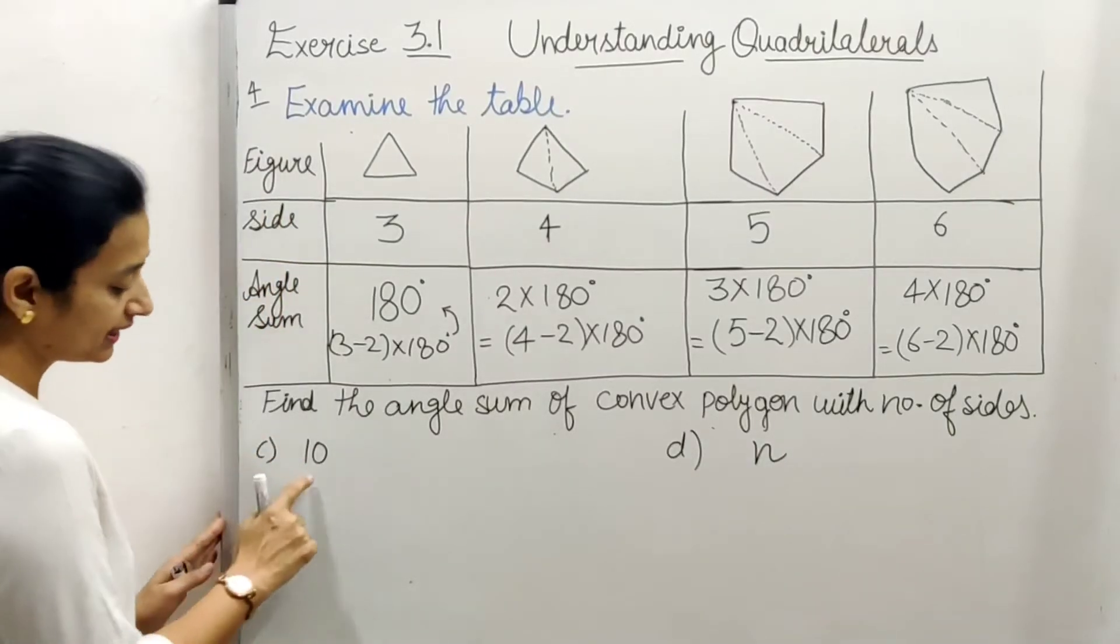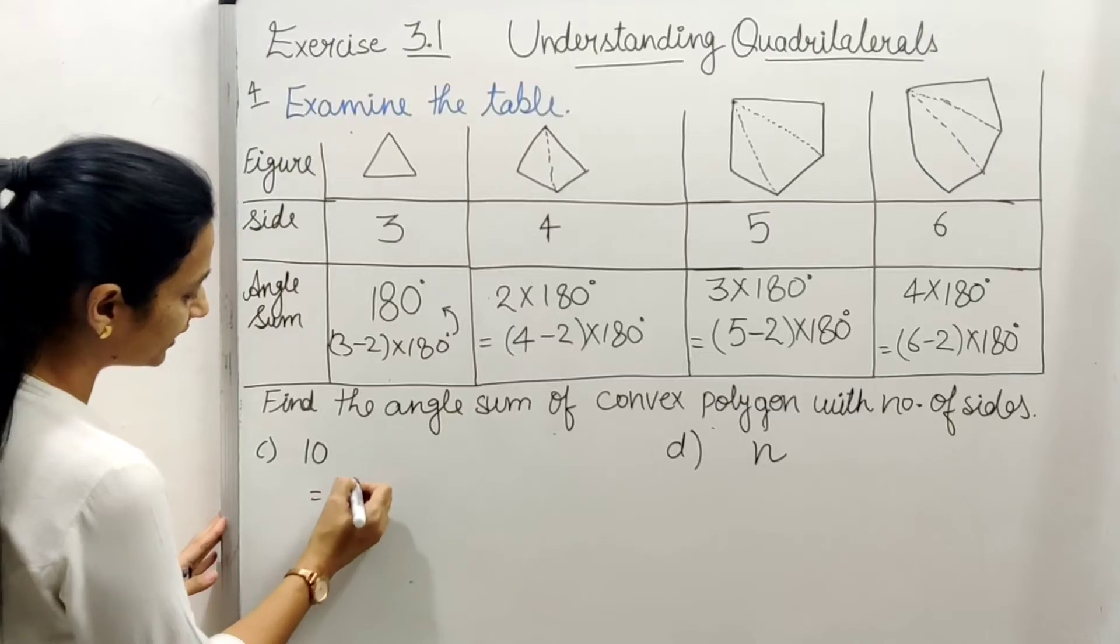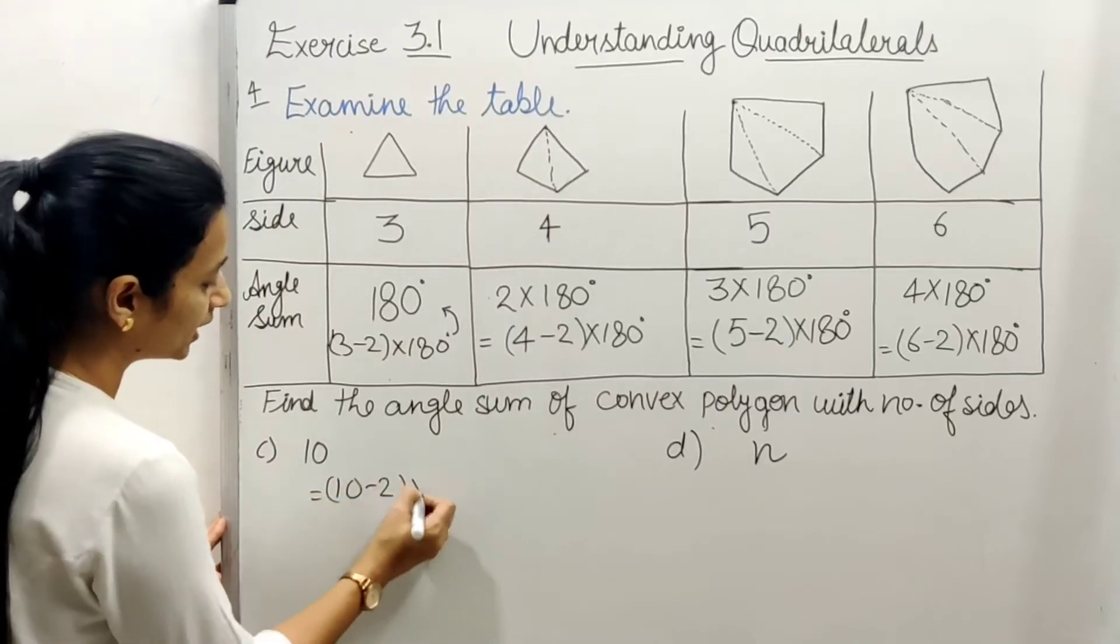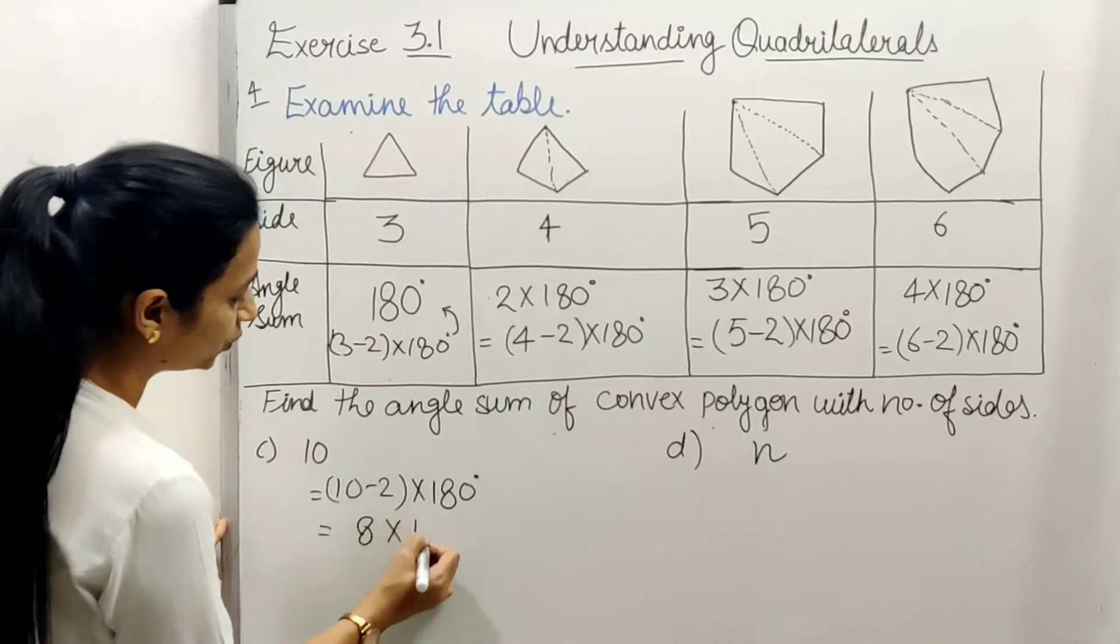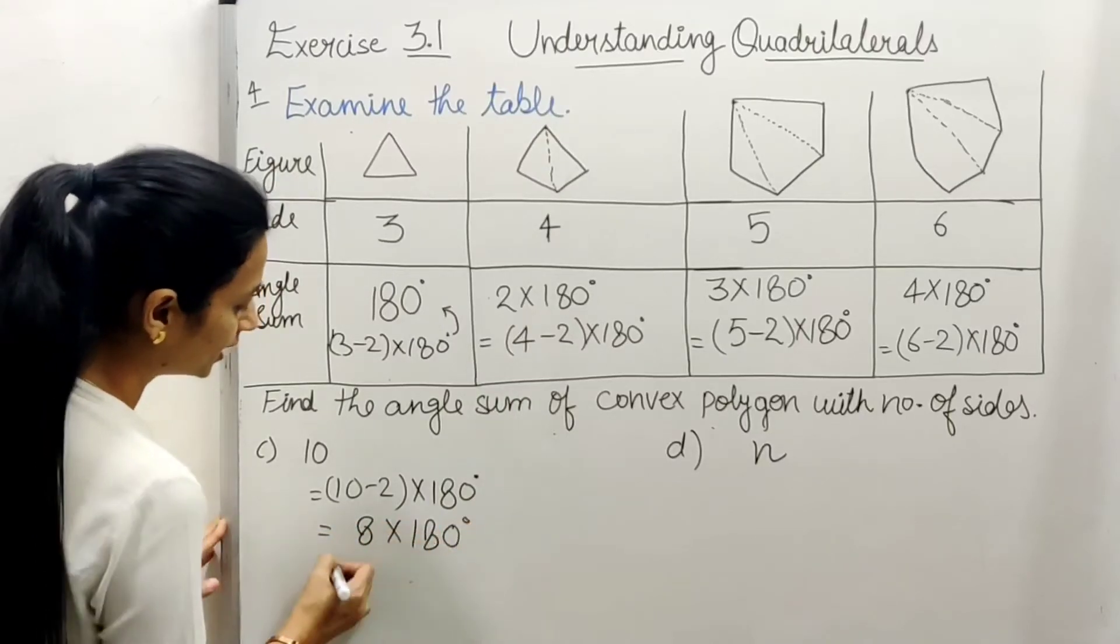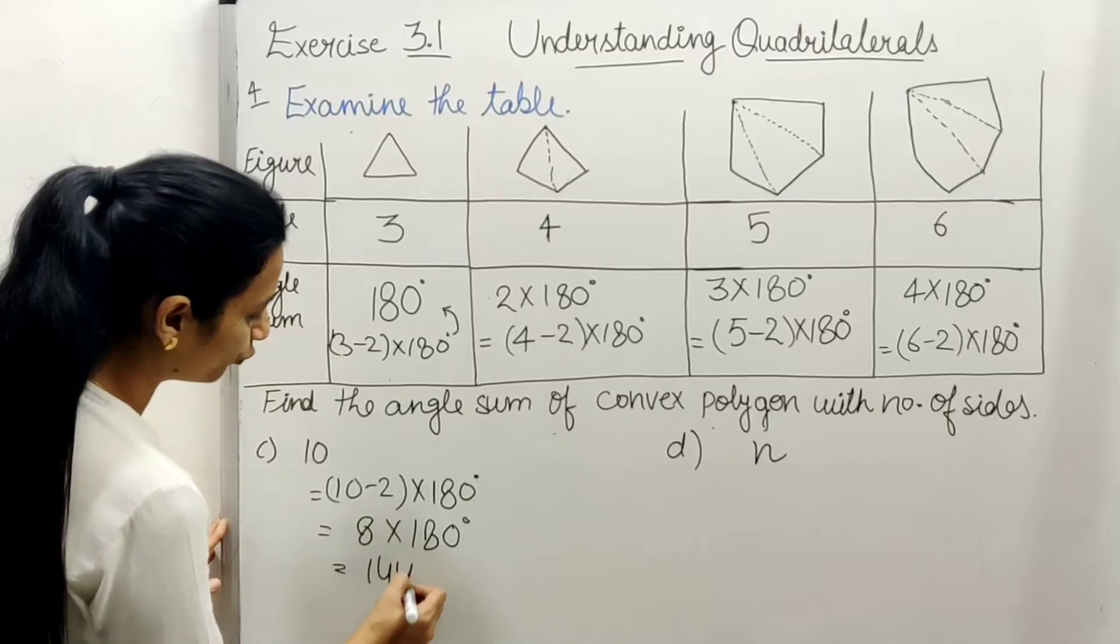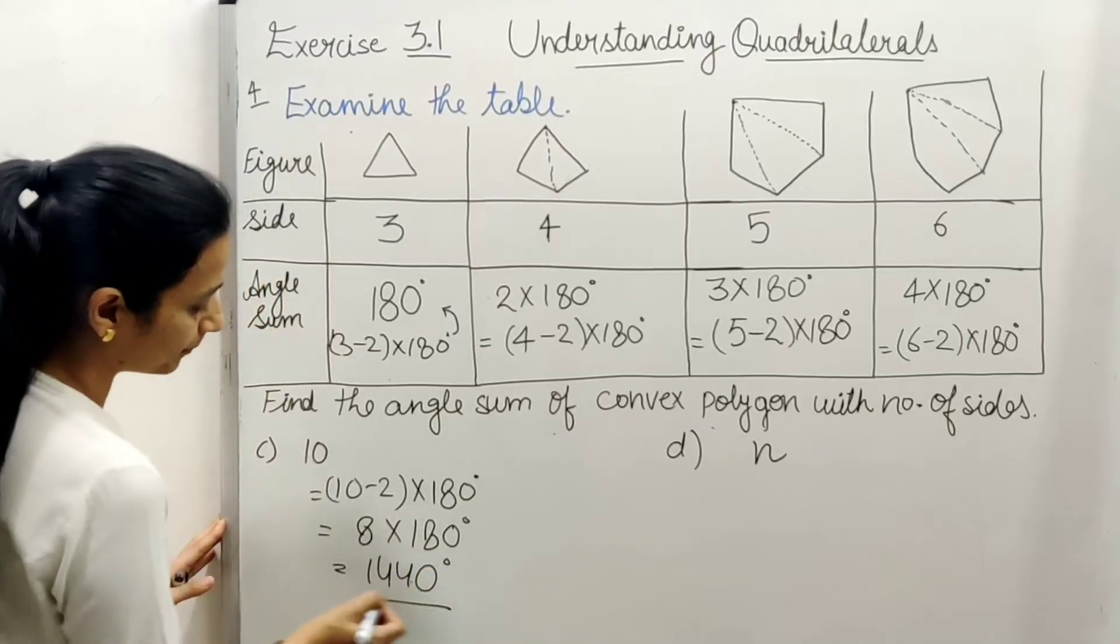c, kitne sides given hai? 10 sides. So kya ho jayega? 10 minus 2 into 180 and 8 into 180 equals to 1440 degree. And last,